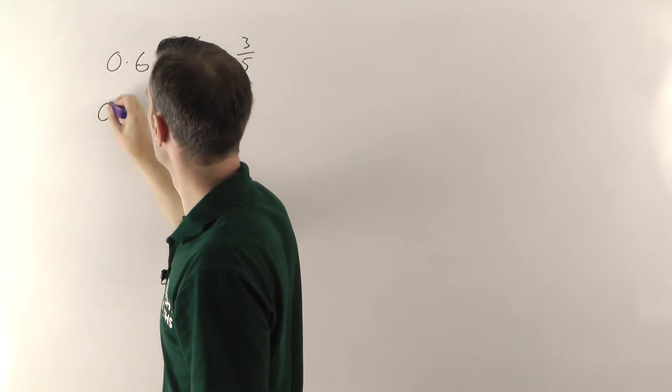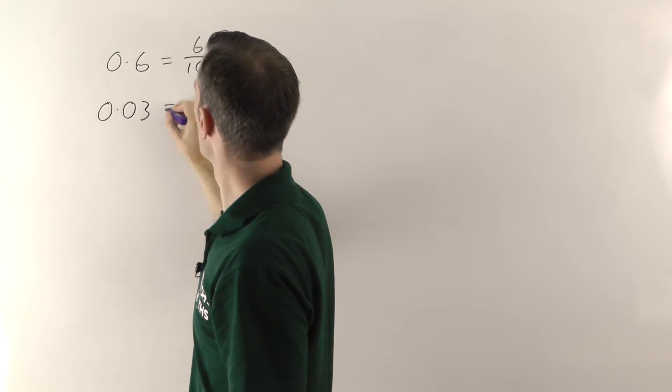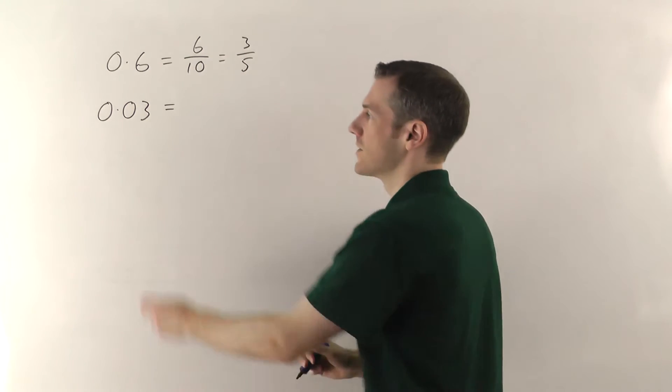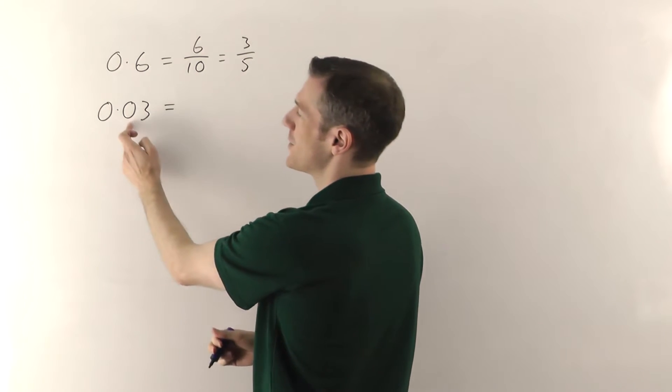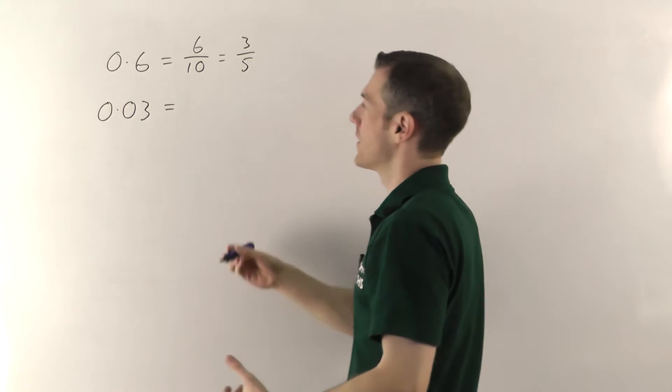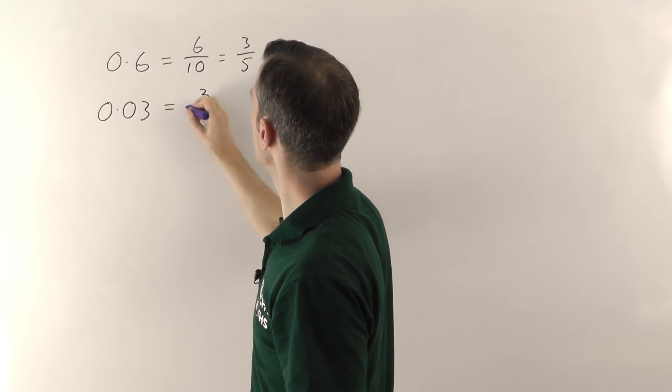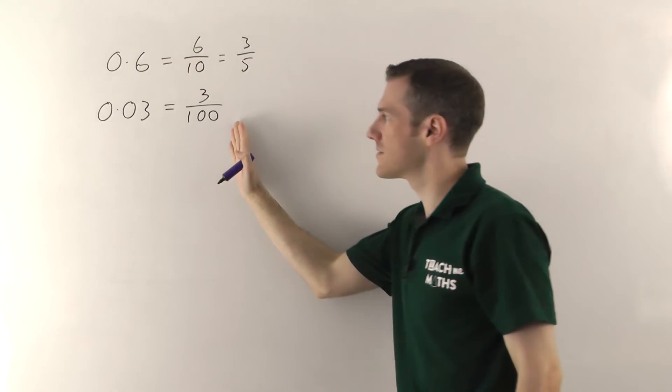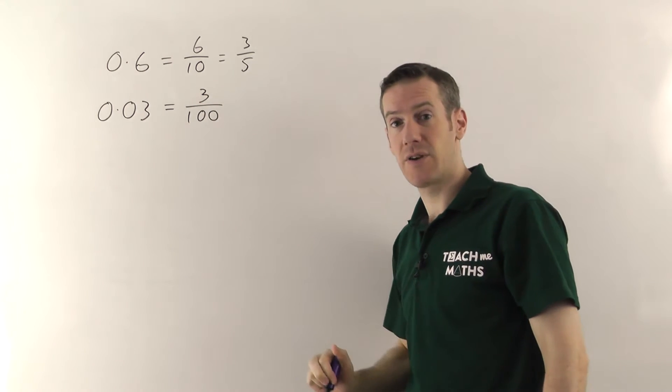Let's look at another one. 0.03. So you've got no units, no tenths and 3 hundredths. So as a fraction, that's just 3 hundredths. Check if it cancels down. This one doesn't. So that's your answer.